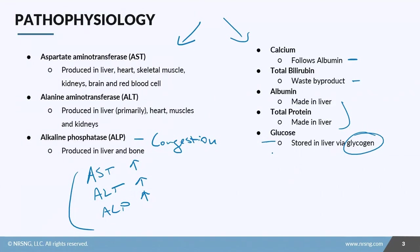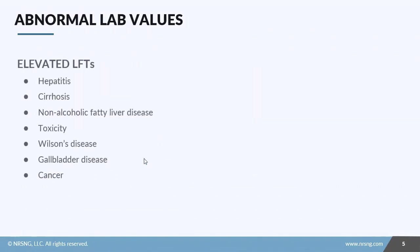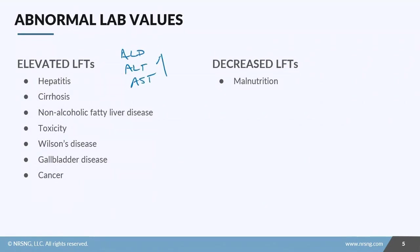There are separate lessons on each of these labs for more detail. For collection, liver function tests are submitted in a green top tube, and you want to make sure your patient is fasting so their nutrition doesn't interfere with results. If all values are elevated — ALP, ALT, and AST together — you can look at primary liver causes such as hepatitis, which can be viral or infectious, and cirrhosis, which is scarring of the liver.